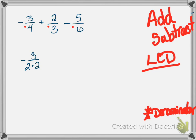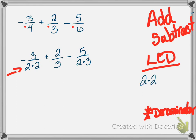For the LCD I start by writing what's in the first denominator: 2 times 2. Then I look at the second fraction — I have a 3. Is a 3 already in my LCD? No, so I add 3 to the LCD. Then I look at the last fraction with denominator 6 (which is 2 and 3). Both 2 and 3 are already in my LCD, so I don't write them again. My LCD is 2 times 2 times 3, which equals 12.